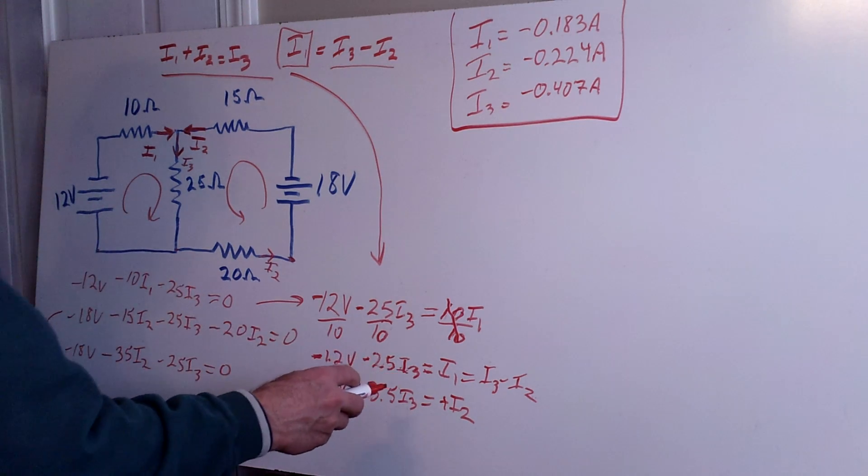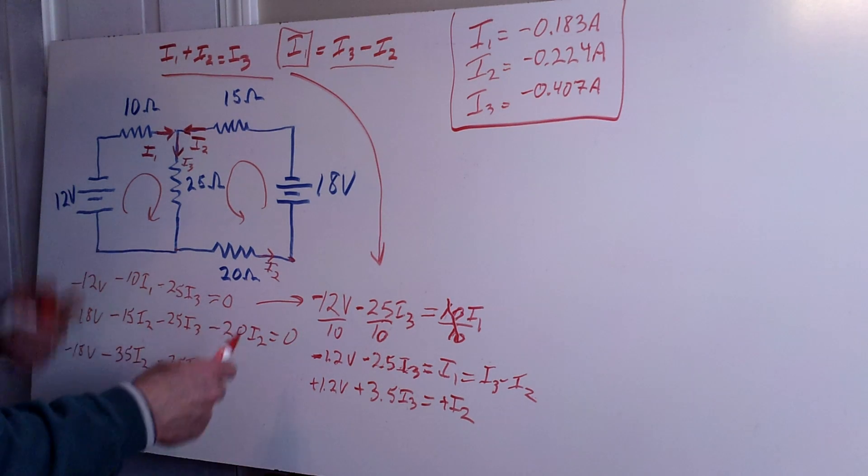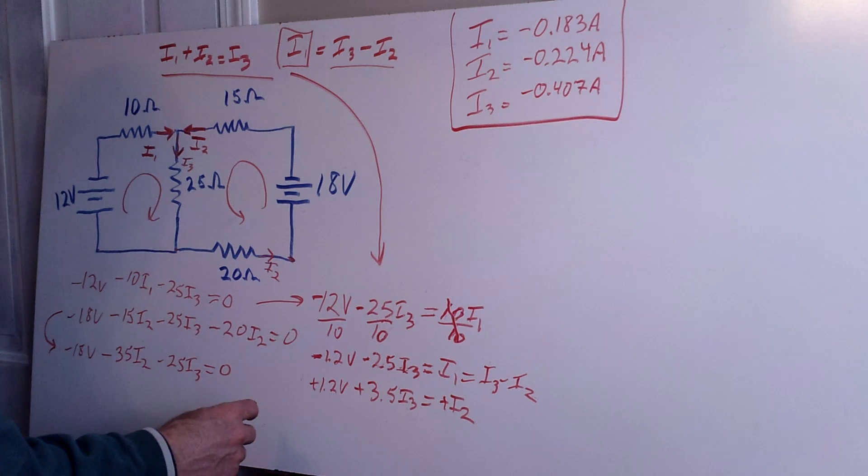And I'm going to have I2 and I3 in one equation and another equation with I2 and I3. And it looks like they're not identical. Sometimes we generate the same equation by going in circles, but I think we're okay here.